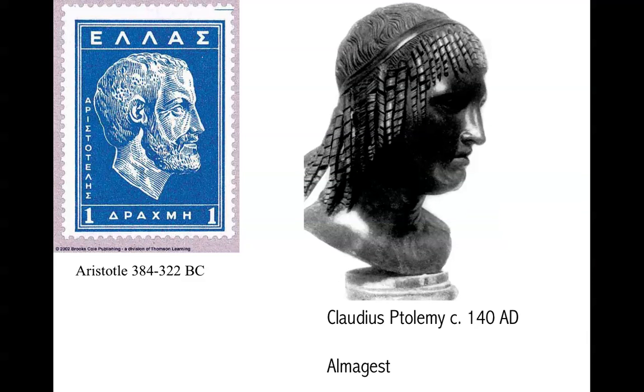Well, the Greeks, starting with Aristotle, shown here on a Greek stamp from the first time that Greece was not part of the Euro, and a bust of Ptolemy, who was about four centuries later, who wrote a great star catalog called the Almagest.